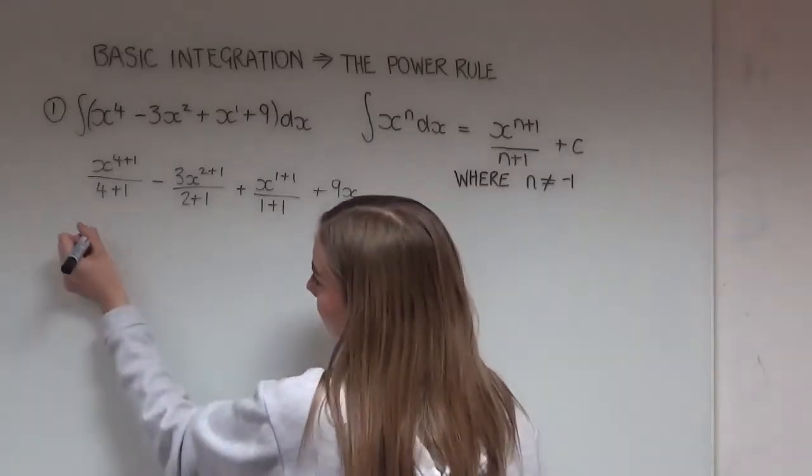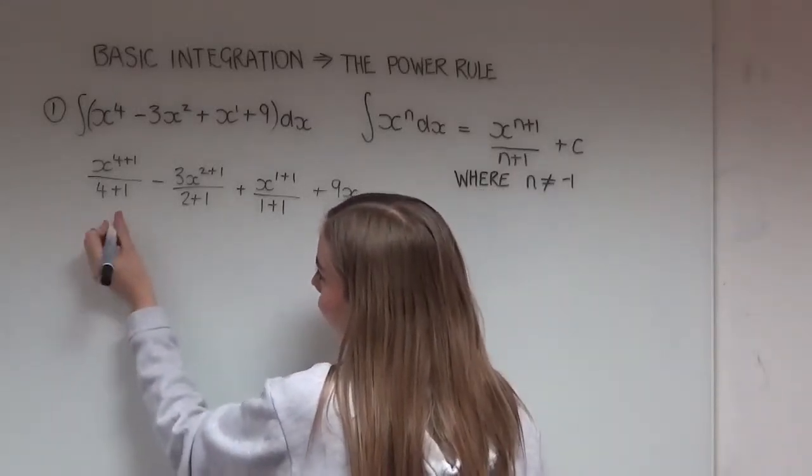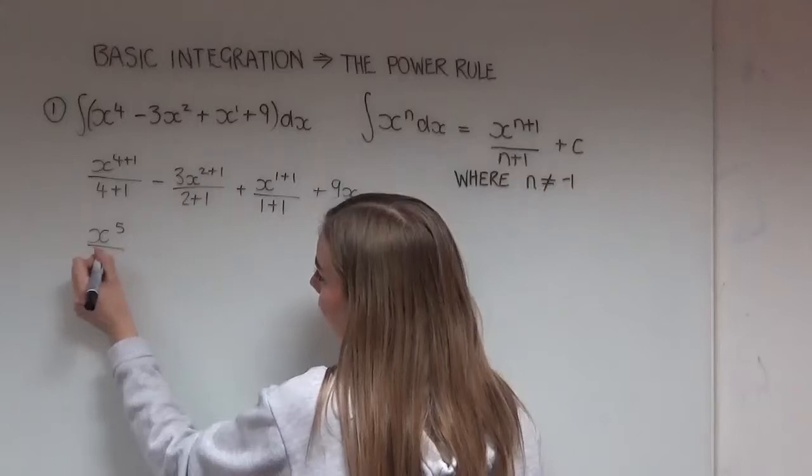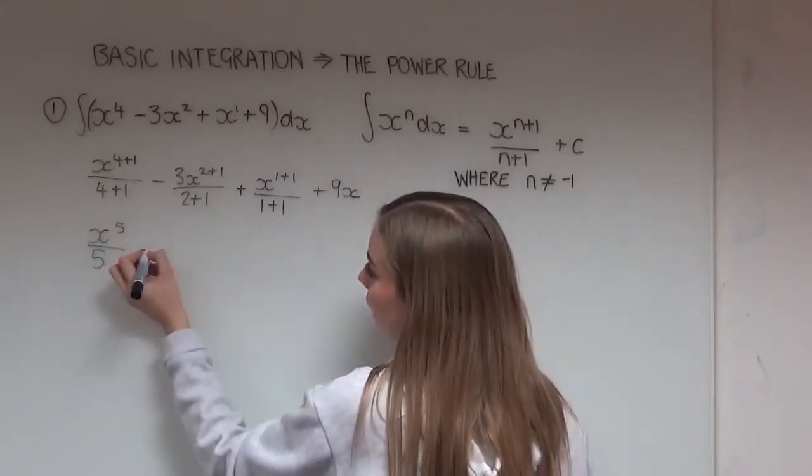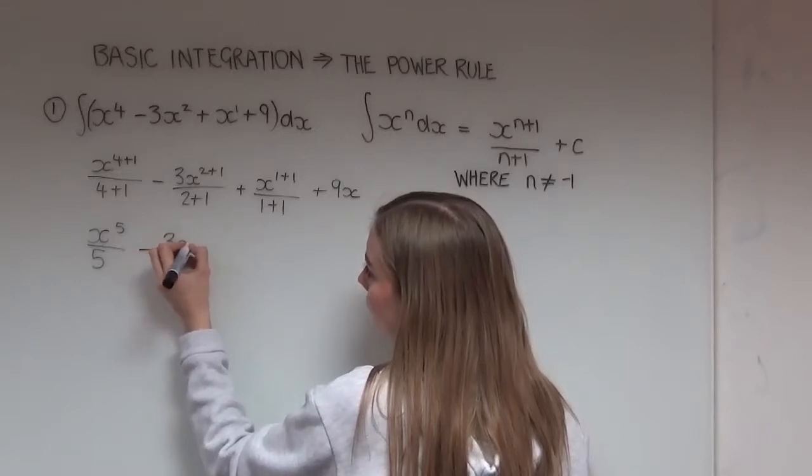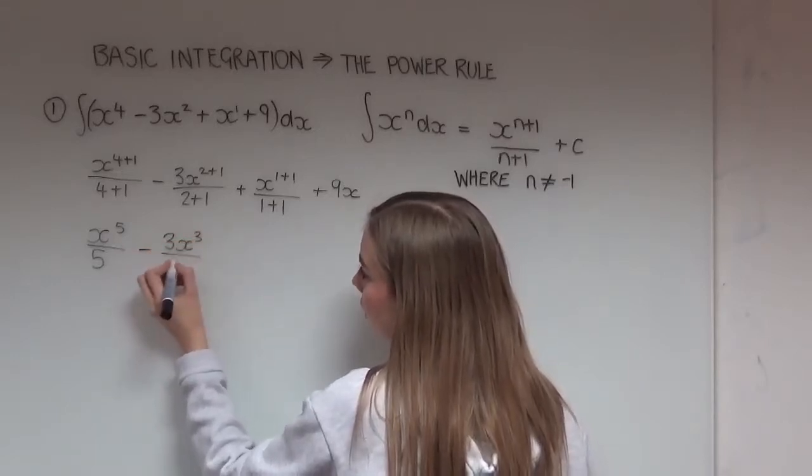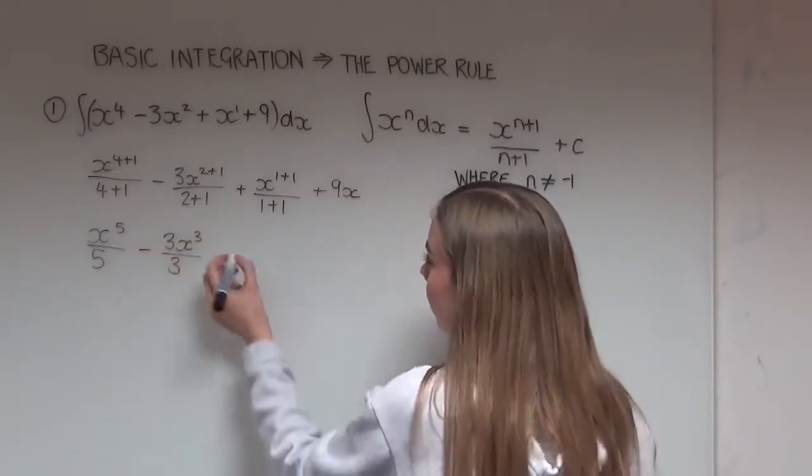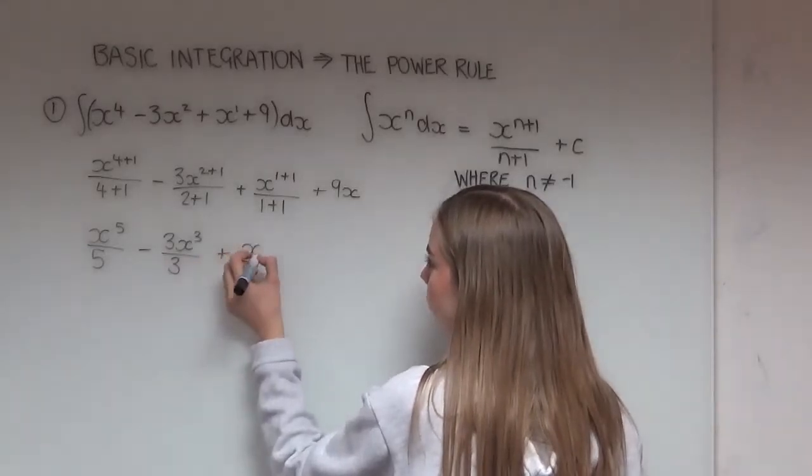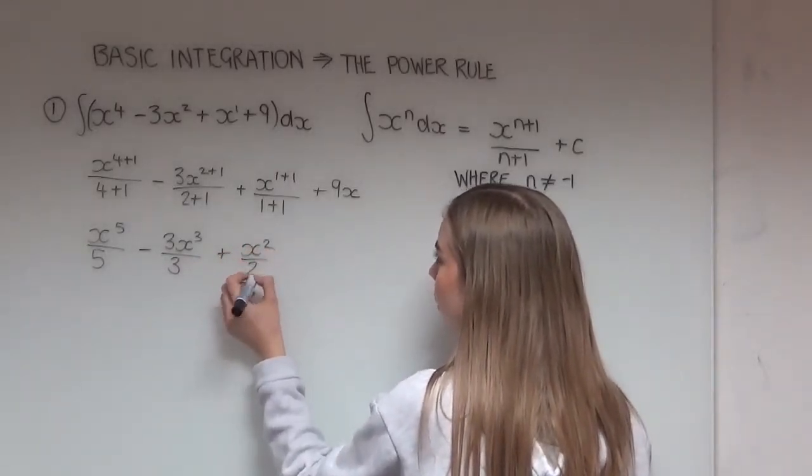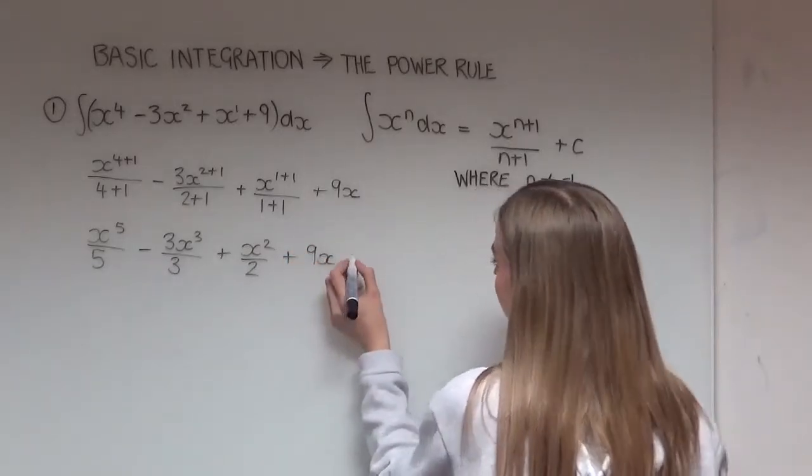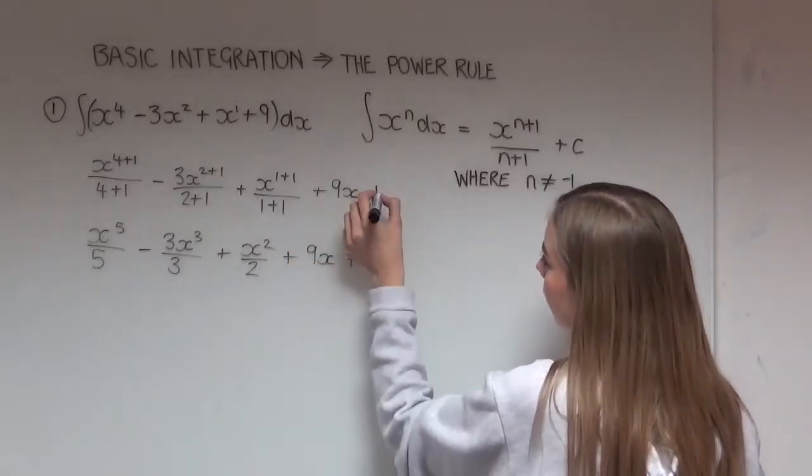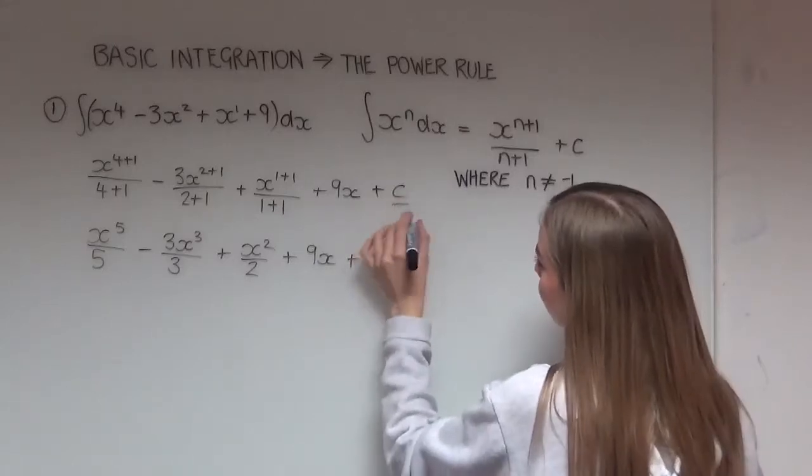Then we can tidy this up a bit. So 4 plus 1 is 5, so that's x to the power of 5 divided by 5. Then we have minus 3x cubed divided by 3, plus x squared divided by 2, plus 9x, plus our c, which I forgot to add on there, but that's important, remember c.